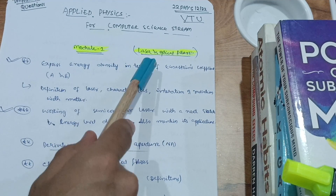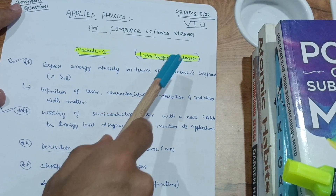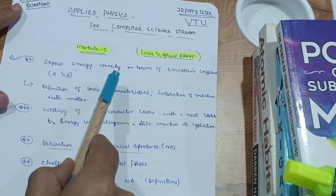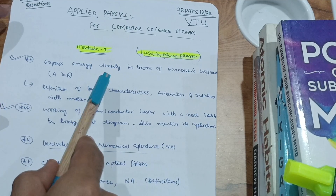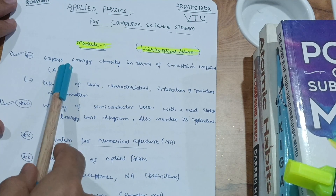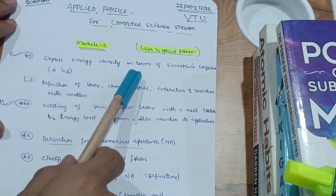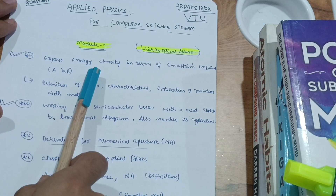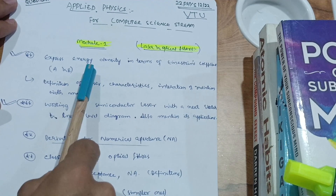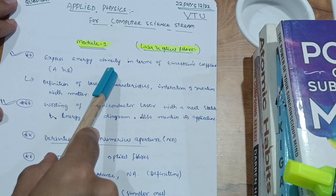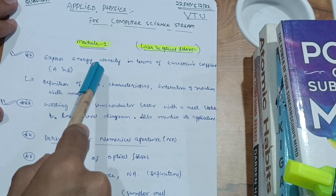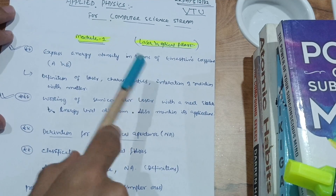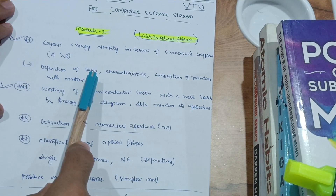In module one, the chapter name is Laser and Optical Fibers. I have figured out some important questions that will definitely be asked in the examination. First, you have to derive the expression for energy density in terms of Einstein's coefficients A and B. It is a simple derivation with about three or four steps, though there is also some theory to write along with the equations.